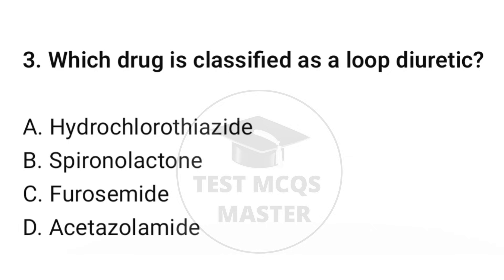Question number three: which drug is classified as a loop diuretic? The correct option is C: Furosemide.